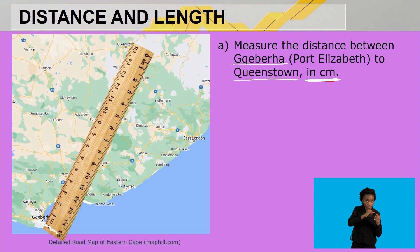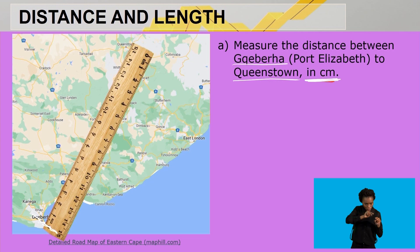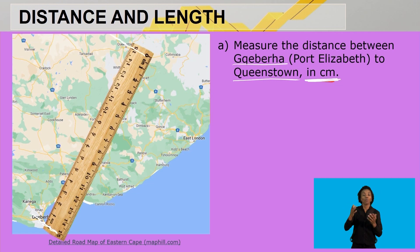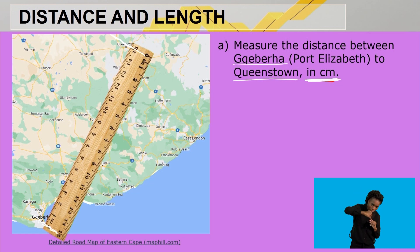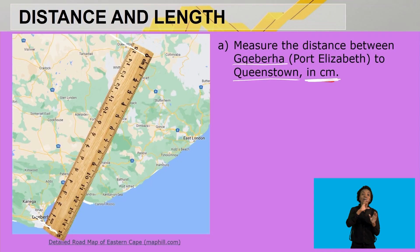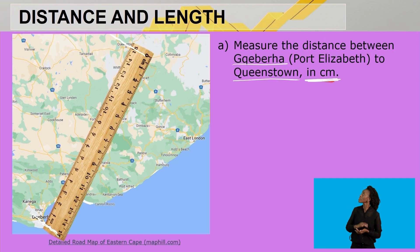Then you move to the second location, Queenstown. There is a circle indicating Queenstown, so you go there and draw another line at the end of that circle. Now you have your two locations. Take your ruler and pencil and draw a straight line — a crow flies means the straight-line distance between two places. After drawing the line, place your ruler from zero to the last value, and it shows we are moving from zero to 15 centimeters.